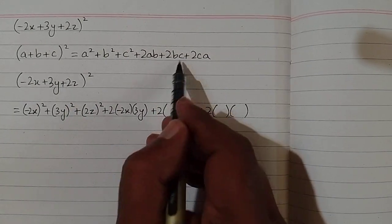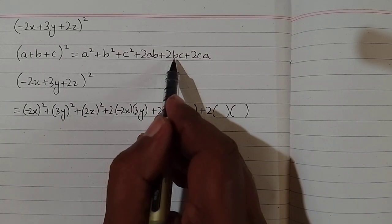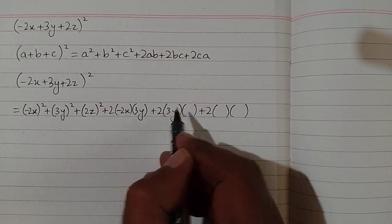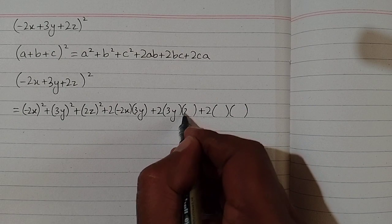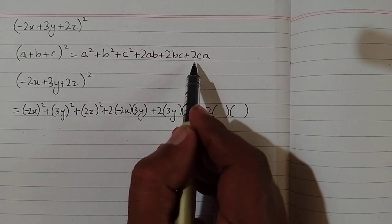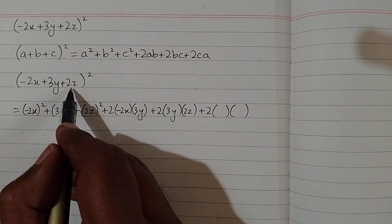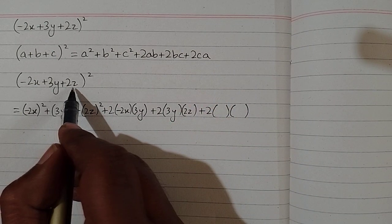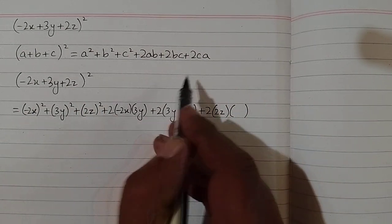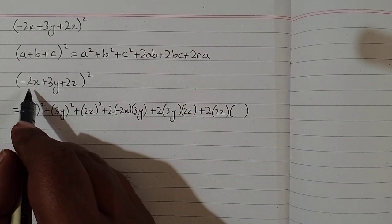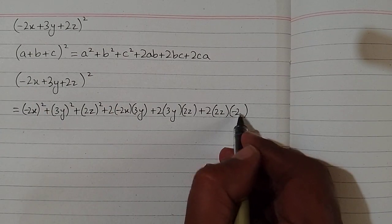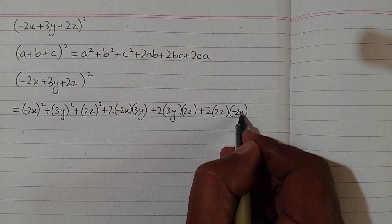For the 2bc term, we put 3y in place of b and 2z in place of c. Then for the 2ca term, we put 2z in place of c and minus 2x in place of a.